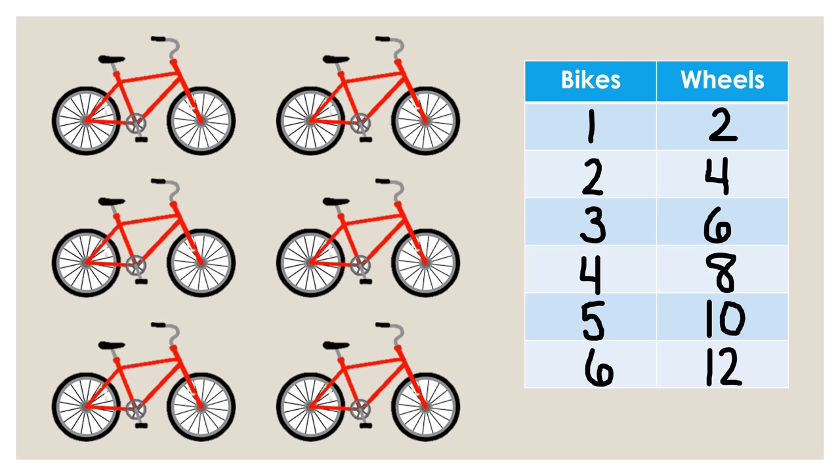Does this table look similar to the ice cream cones and scoops table we already constructed? Did you notice a connection between the numbers in the two columns? I noticed that if I doubled the number that is in the bikes column, I get the number that's written in the wheels column.